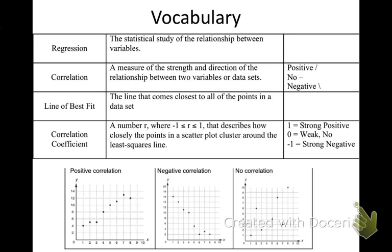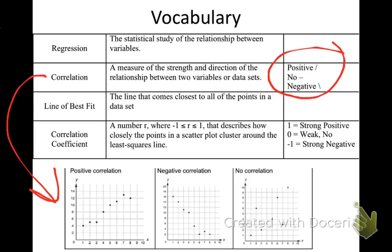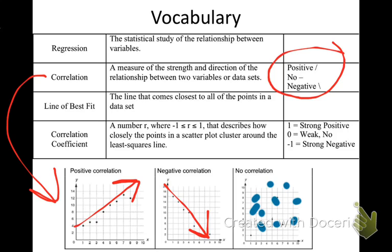Correlation is the measure of the strength and direction of the relationship between two variables or data sets. You can have three types: positive correlation, which means it's going up just like a positive slope; negative correlation, meaning going down like a negative slope; and no correlation, where the points are all over the place with no consistent pattern.